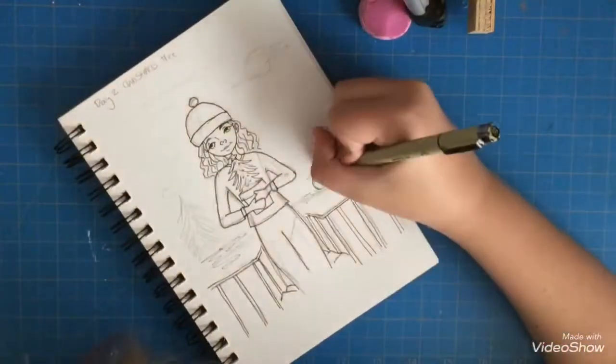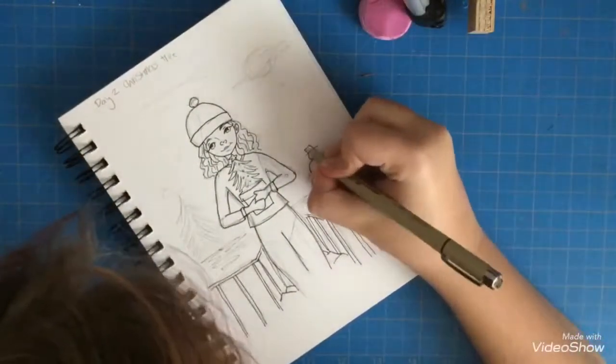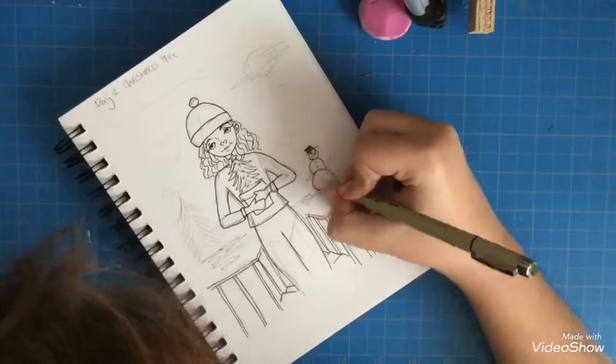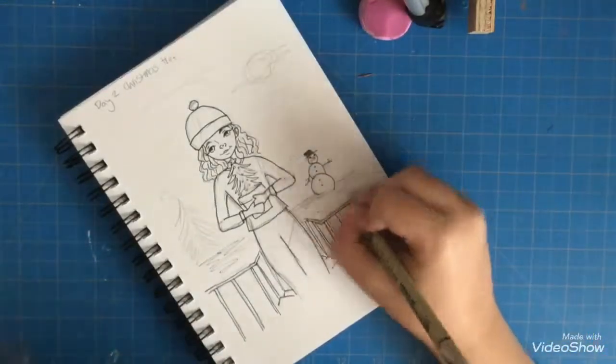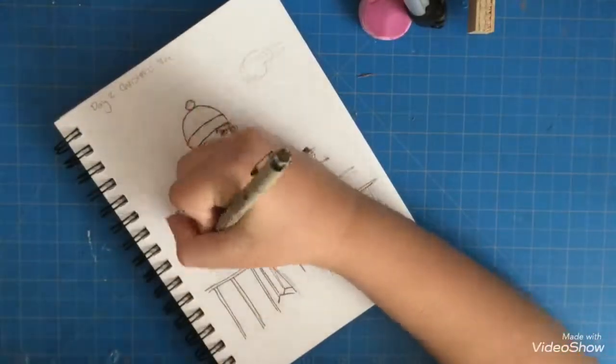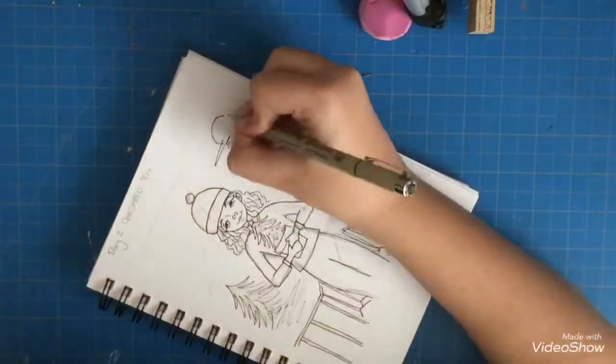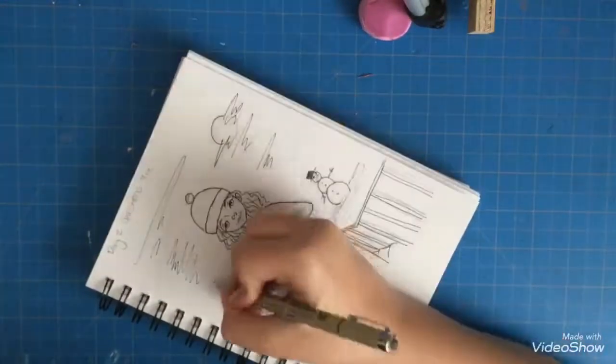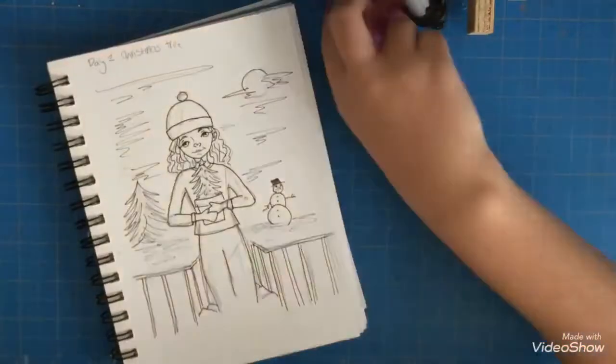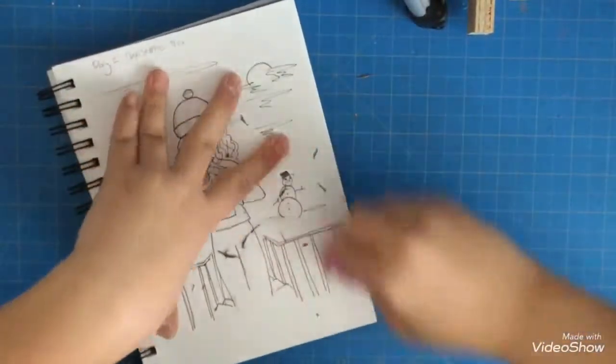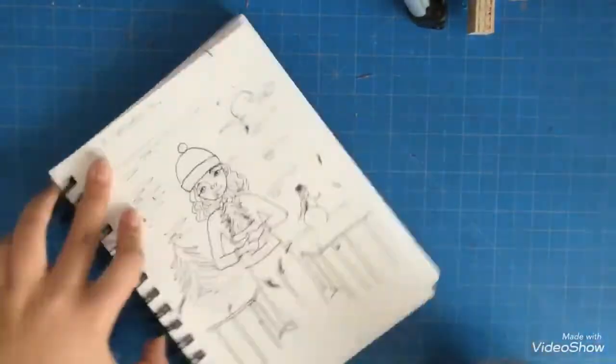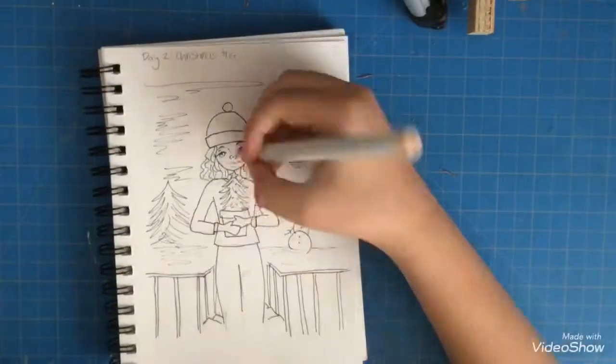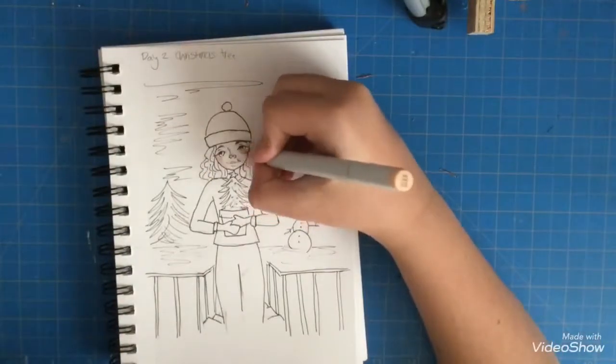I wasn't sure what to do for the prompt 'Christmas tree' because I didn't want to just draw a Christmas tree—that's kind of boring. I thought about a family decorating a Christmas tree, but that wasn't working out. Then I thought of a person sitting in an armchair next to a Christmas tree, and that wasn't working out either, so I came up with this.